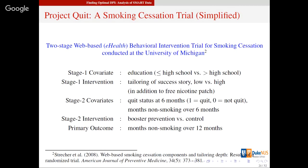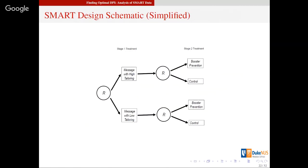In the second stage, participants get a booster prevention or a control follow-up treatment. The study has this kind of SMART structure — the simplified version — where one treatment component is high versus low tailoring randomized at stage one, and then booster versus control at stage two. Because of the fractional factorial structure we can use all the data and focus on this intervention, which came out to be most significant in the primary analysis.